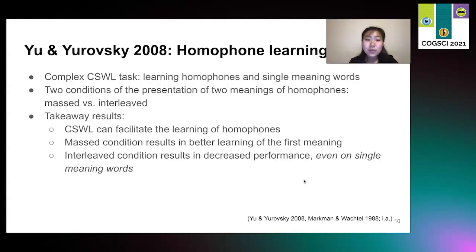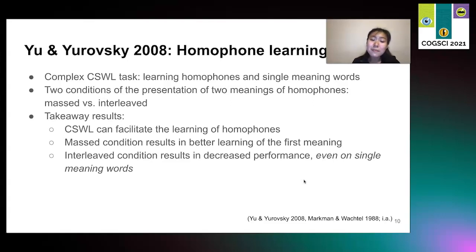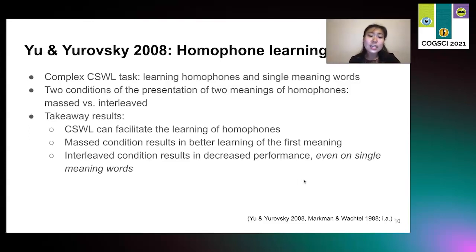The study I will present is Yu and Yurovsky 2008, which is a homophone learning study. This was a complex cross-situational word learning task in which participants learned homophones and single-meaning words. There were two conditions — mass and interleaved — referring to the presentations of the two meanings of the homophones. In the mass condition, first you saw the homophone just with its first meaning multiple times, and then you'd see it with the second meaning. In the interleaved condition, if you saw the homophone with its first meaning, then the next time you'd see it with the second meaning, and the next time with the first, and so it would alternate.